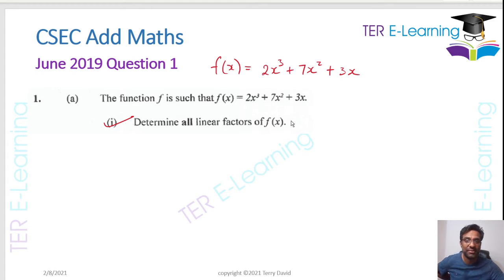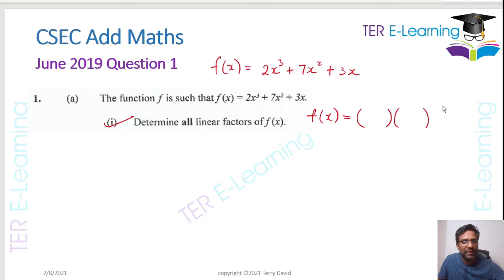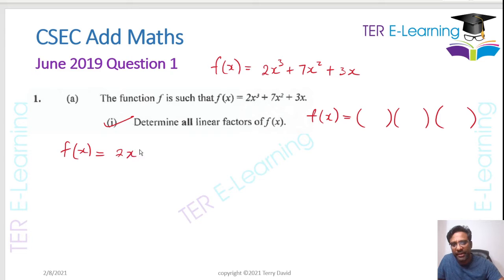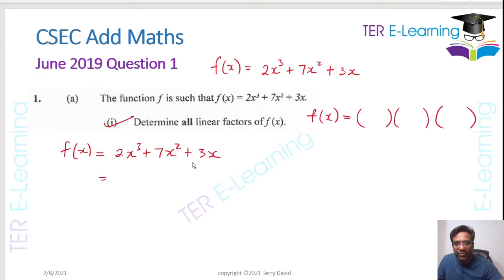When they say 'determine all the linear factors,' we want to write f(x) in factorized form as the final answer. So we write out f(x) = 2x³ + 7x² + 3x. Because there's no constant, it's straightforward — we can see that x is common to all three terms, so we factor out x to get x(2x² + 7x + 3).